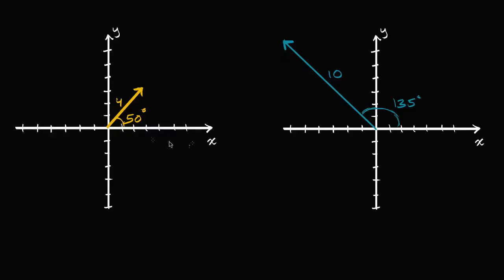We have two examples where we're given the magnitude of a vector and its direction, given by an angle that it forms with the positive x-axis. What we need to do is go from having this magnitude and this angle to figuring out what the x and y components of this vector actually are.